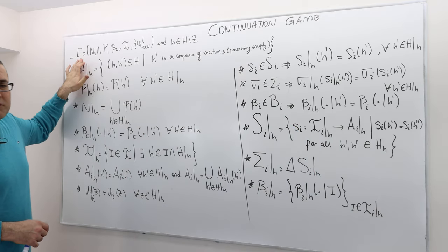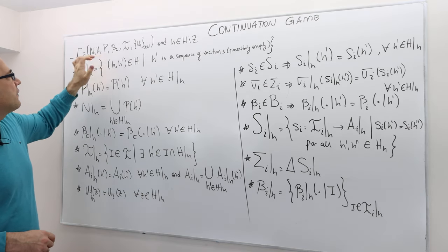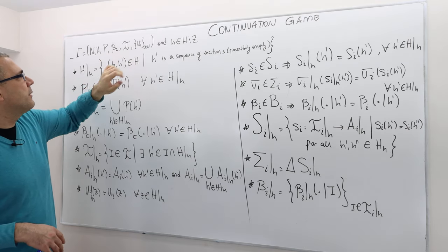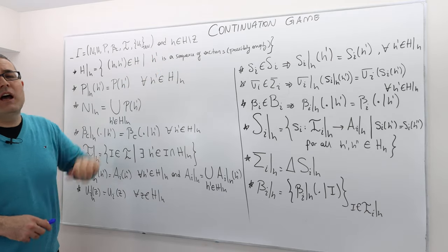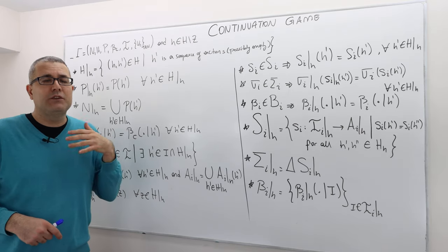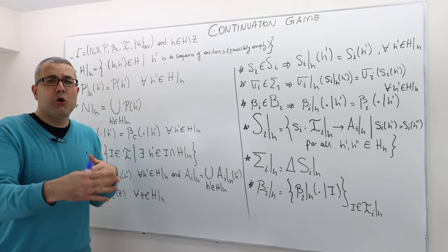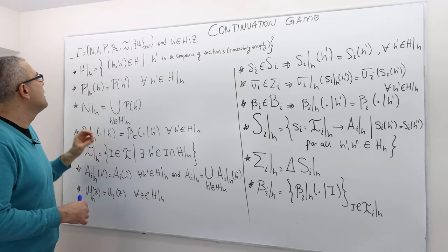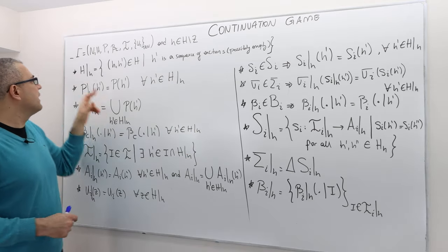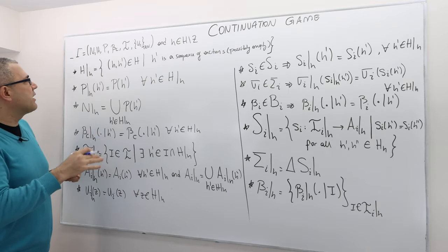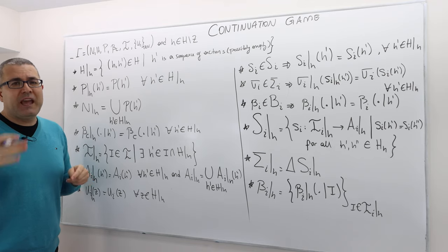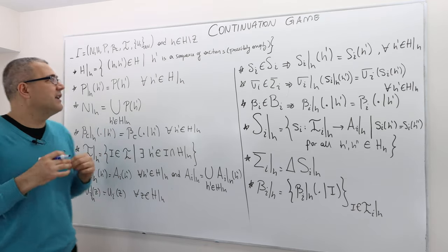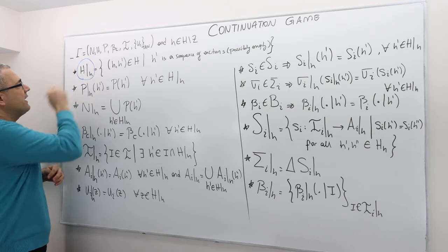Take any extensive form game — a set of players, set of histories, player function, if nature moves its distribution, the information partition, and the payoff function. Then take any non-terminal history. That's important because if you take a terminal history, the game is over and there's no continuation. So you take any non-terminal history h, and I'm going to fix it throughout the definition. Everywhere I have slash with subscript h, it basically says I am restricting the set according to the history h.